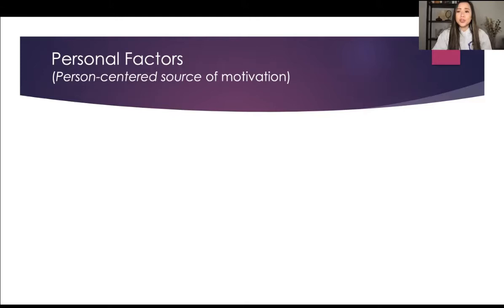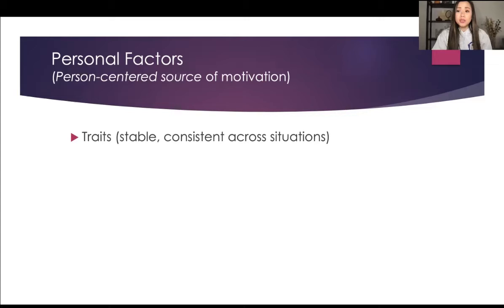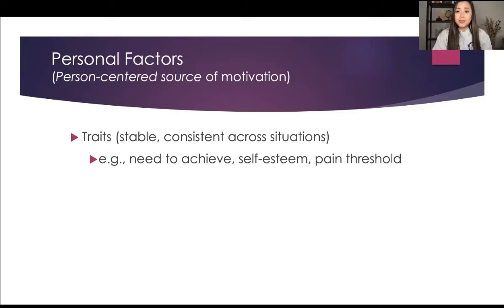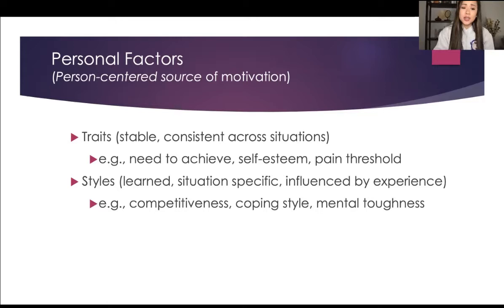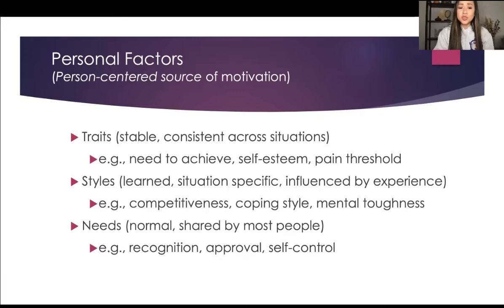Let's look at some examples of what personal factors can look like — these person-centered sources of motivation. There are traits, which are personality traits that are usually stable and don't change. That can be your level of achievement, how ambitious you are, your self-esteem, self-confidence, and that pain threshold athletes have. Then you have personal style, which is usually learned and influenced by your own experience — how competitive you are, how aggressive you can be, your ability to cope in certain situations. Then you have needs, which are shared by most people: recognition, approval, self-control, wanting to feel good about themselves. These are three personal factors where motivation can come from.